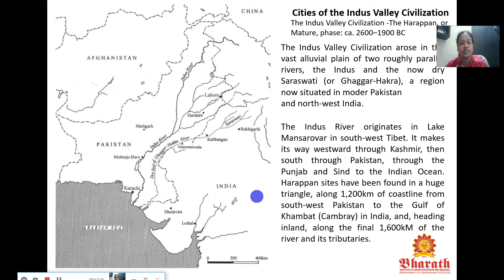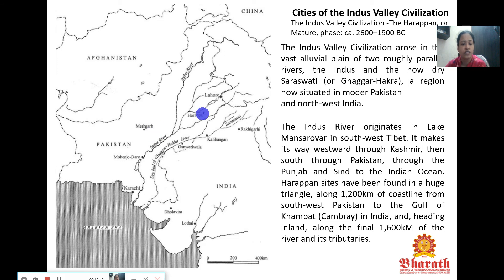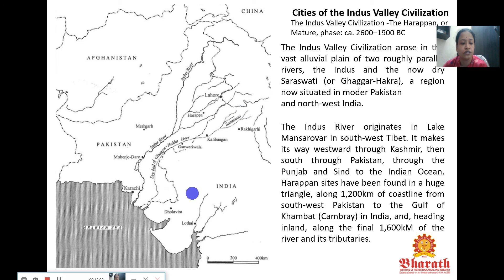The city of the Indus Valley civilization is located in the valley of the Indus River, which is around 1,000 km long, rising from the Manasarovar Lake in the western part of Tibet. It houses various cities: Harappa and Mohenjo-daro, which have very good data from early excavations, and Mehrgarh, Ganweriwala, Kalibangan, Rakhigarhi, Dholavira, and Dhathal, all in the states of India.